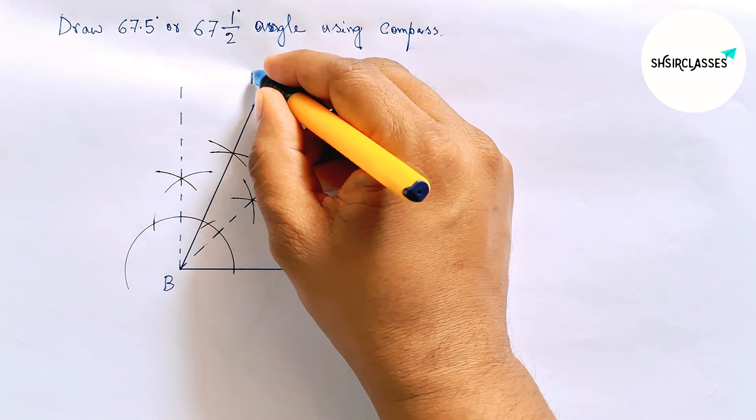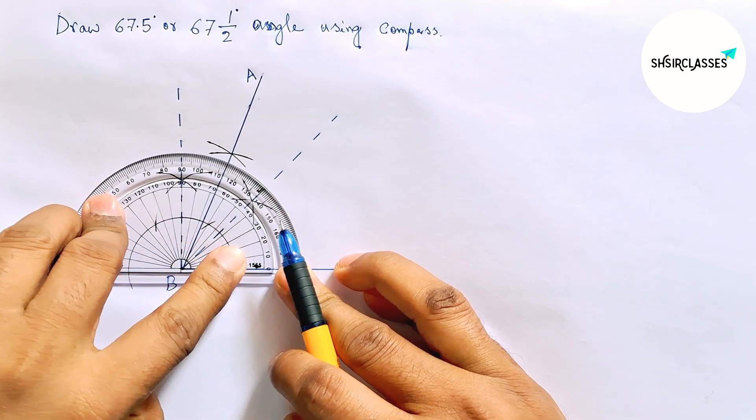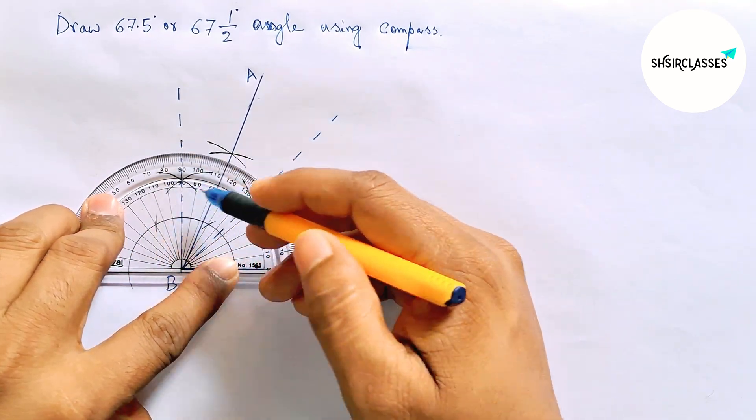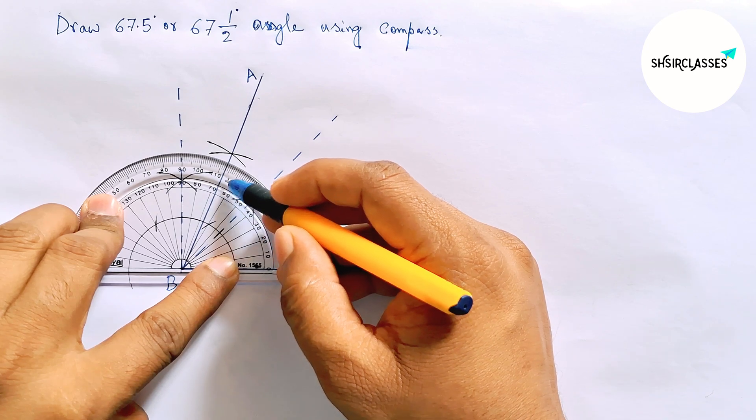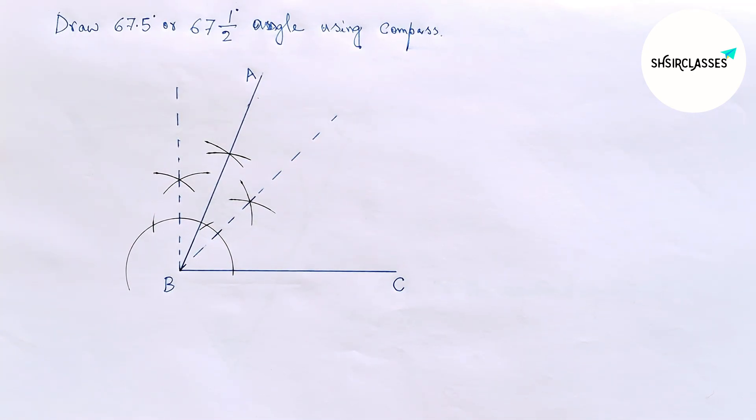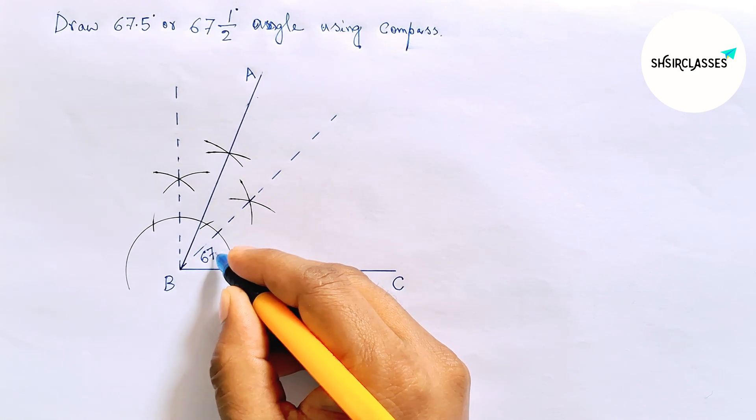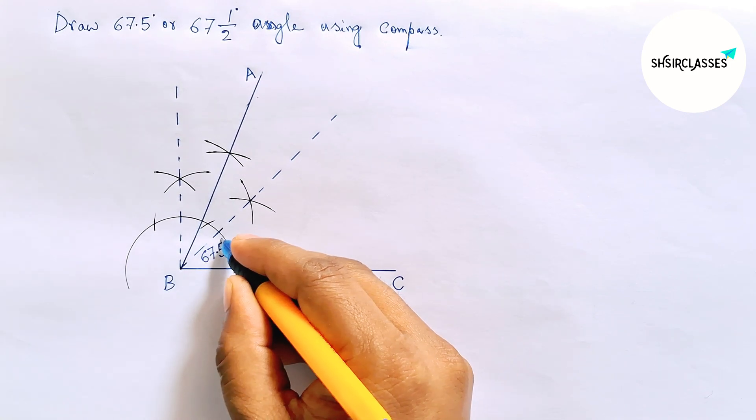Now marking here point A. So angle ABC. Now I am going to check whether it is 67 or not. So here this is 45, this is 90, and here 65, 66, 67 and approximately 67.5 degree. So angle ABC equals 67.5 degree angle.